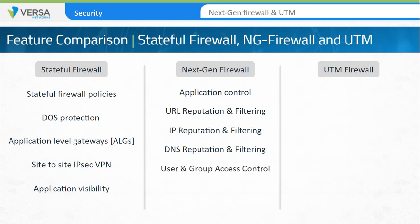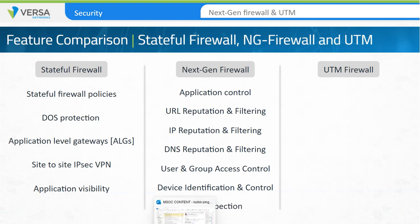TLS inspection is also a next-generation firewall feature. Unified threat management, or UTM firewalls, provide file and reputation filtering by using deep scanning capabilities. These capabilities also provide IDP and IPS functions, antivirus scanning, TLS decryption, and remote access VPN capabilities.